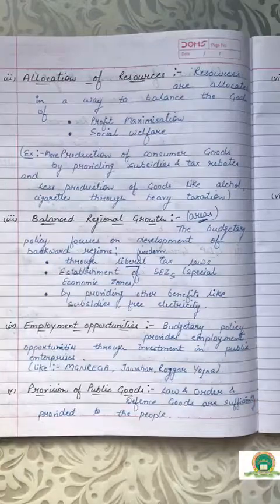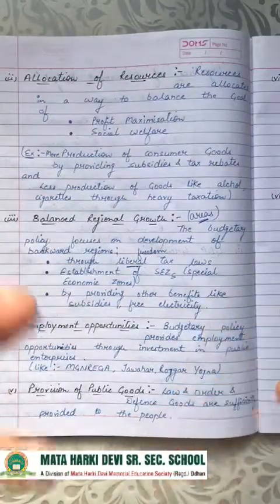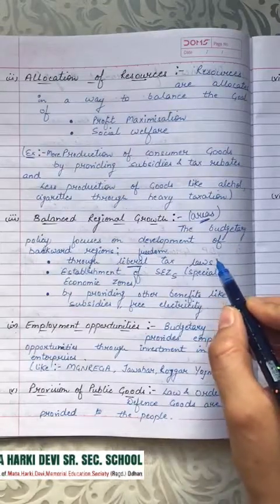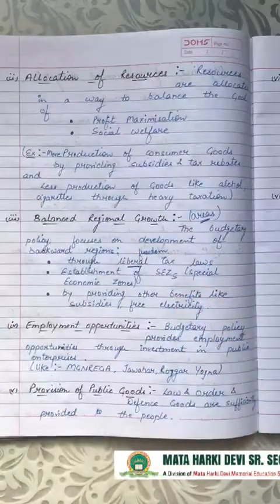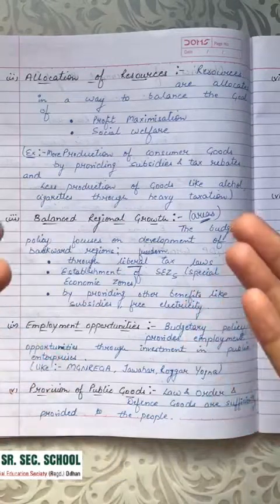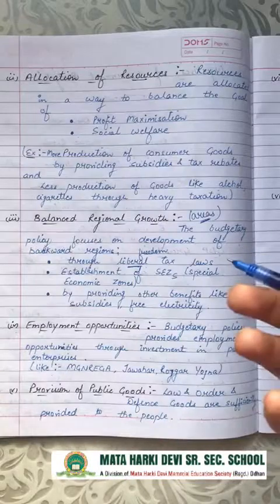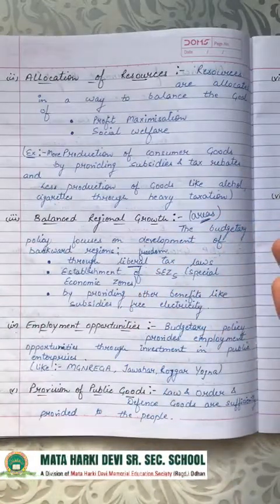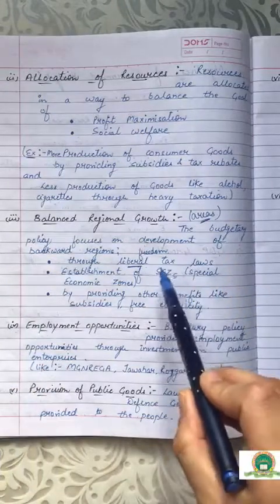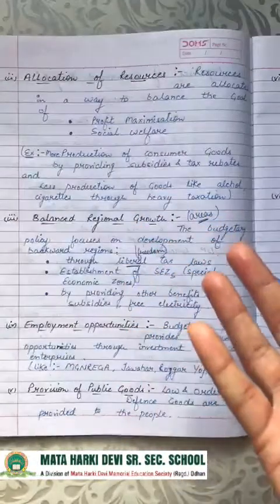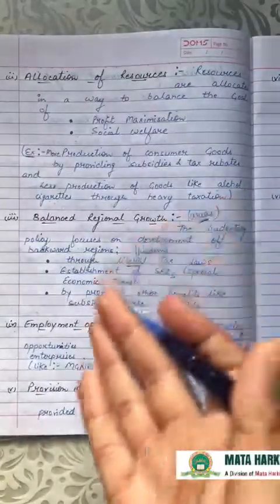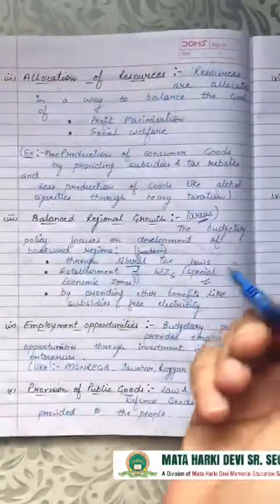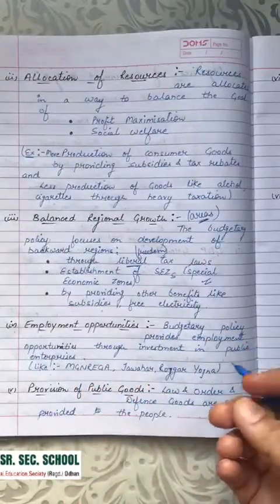Third objective is balanced regional growth. India has regions that are not equally developed — some are very advanced, some are very weak and remote. The budgetary policy focuses on developing backward regions so they can come up to the level of urban or more developed areas. This happens when industries and business units are set up there, providing employment opportunities. Investors are induced through liberal tax laws, subsidies, free electricity, and other benefits to set up industries in such areas — these are known as Special Economic Zones.